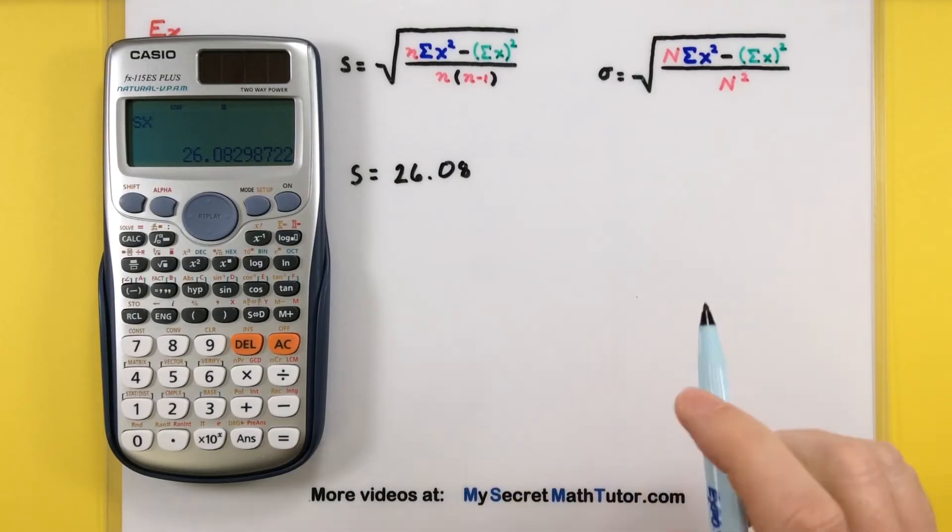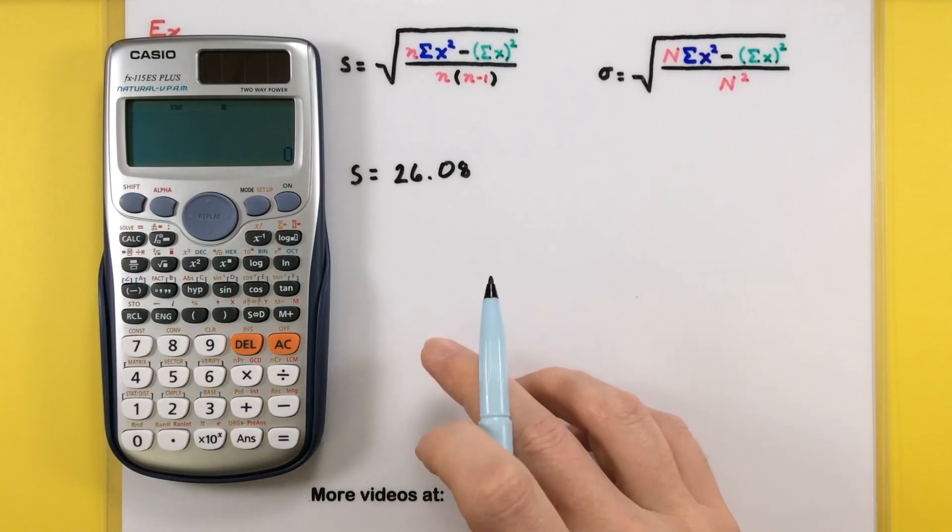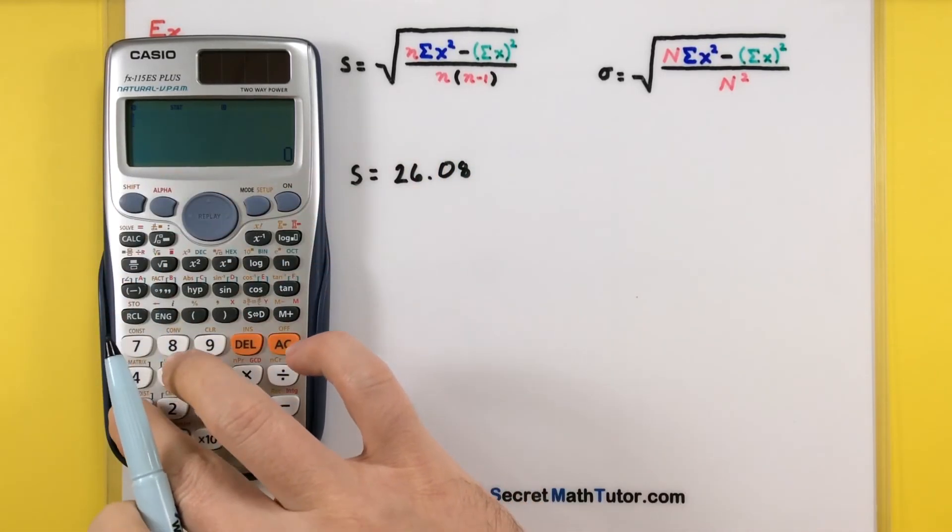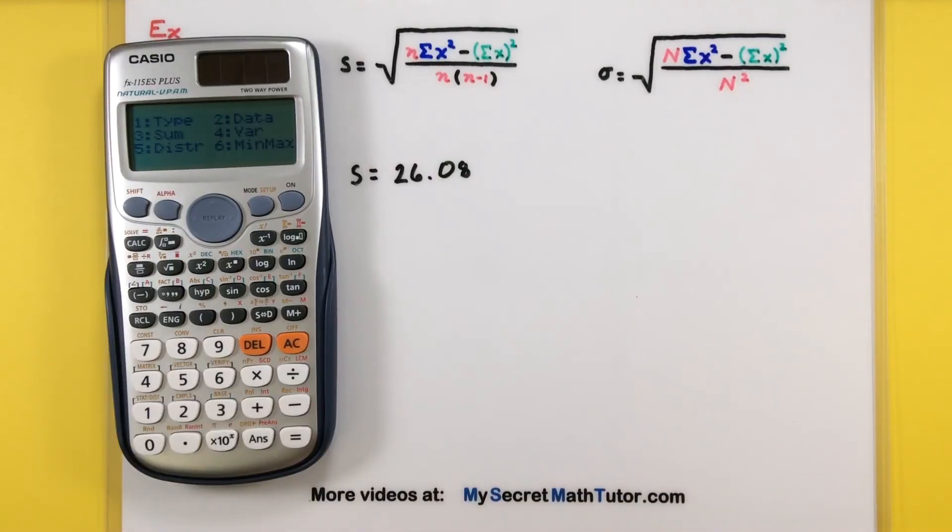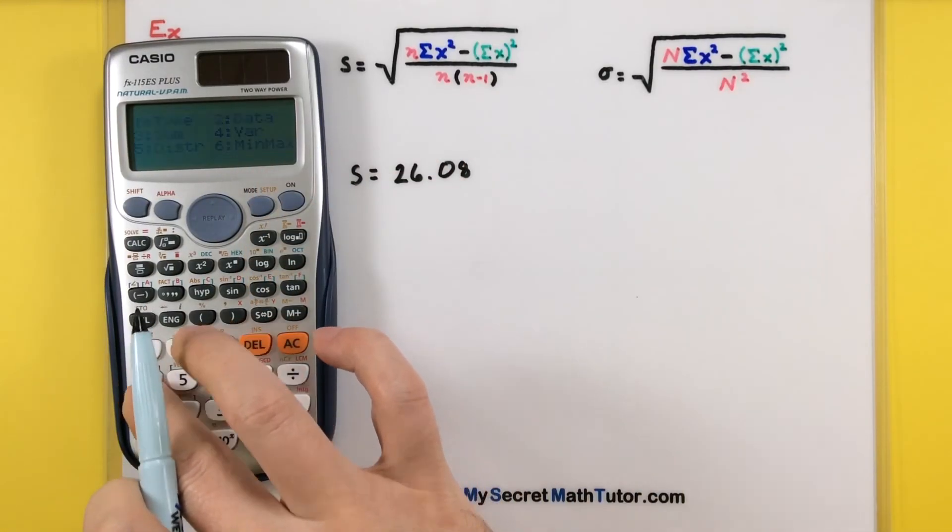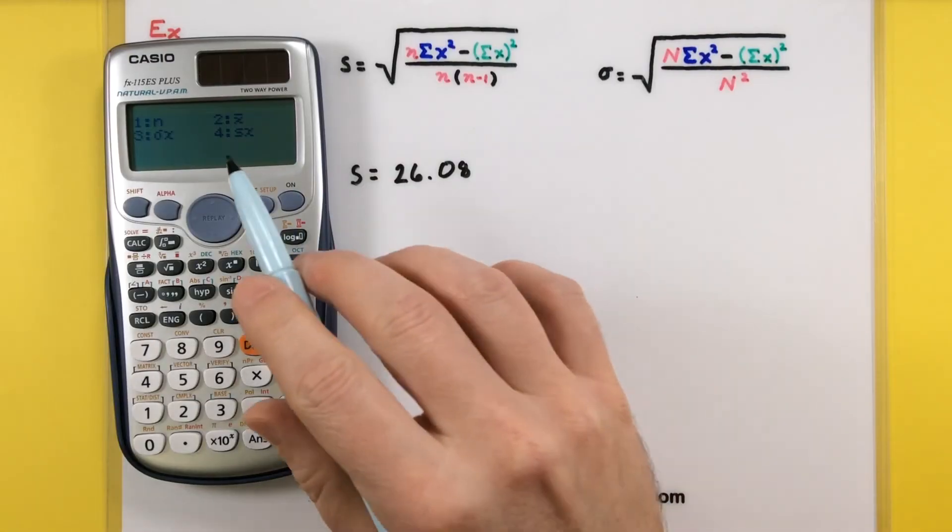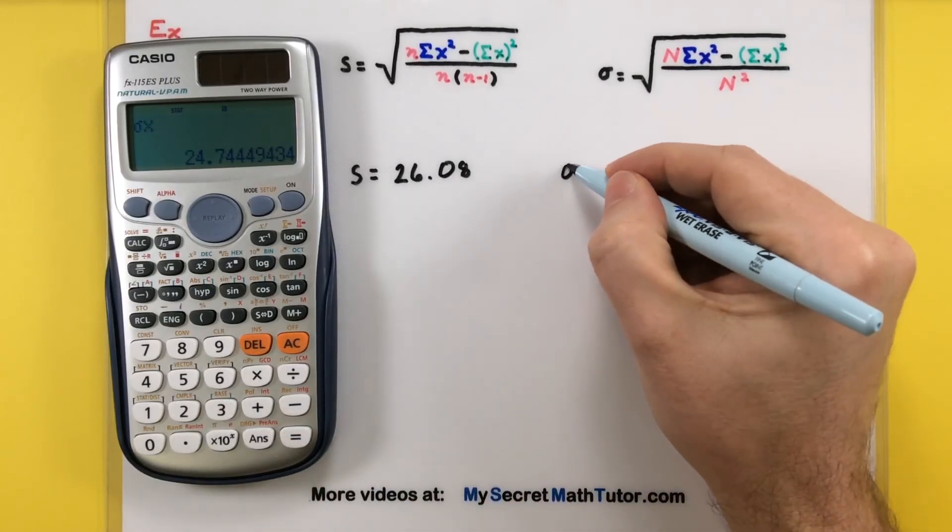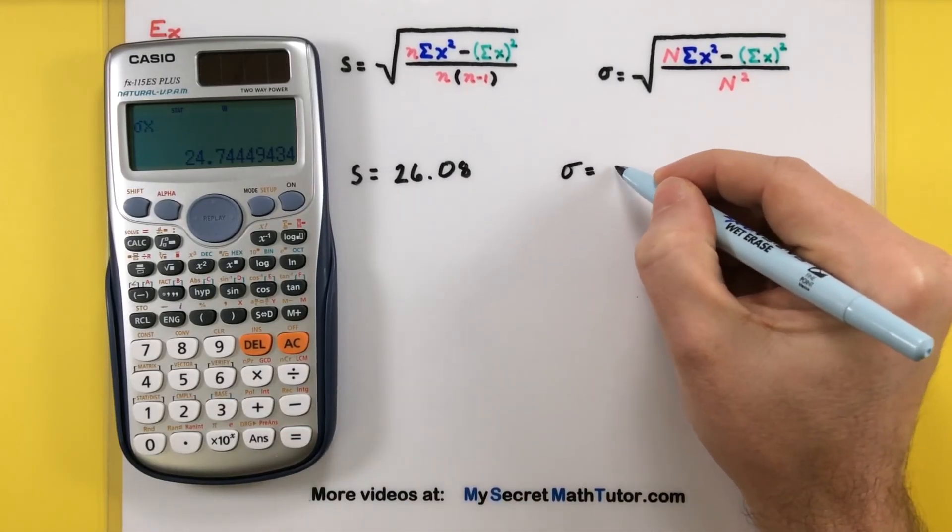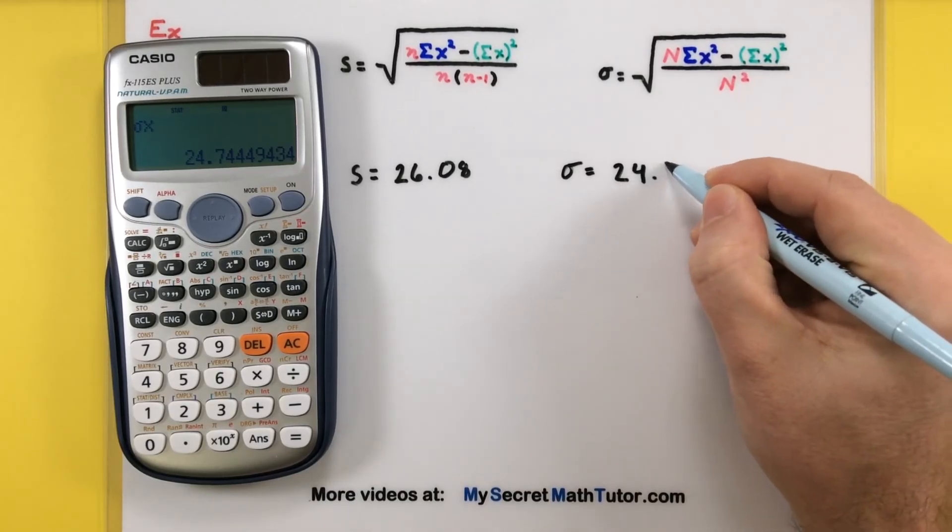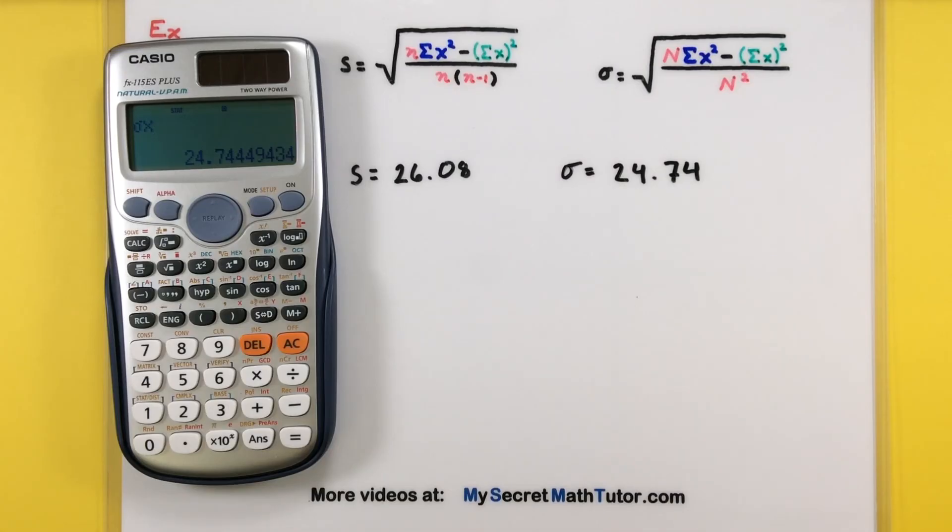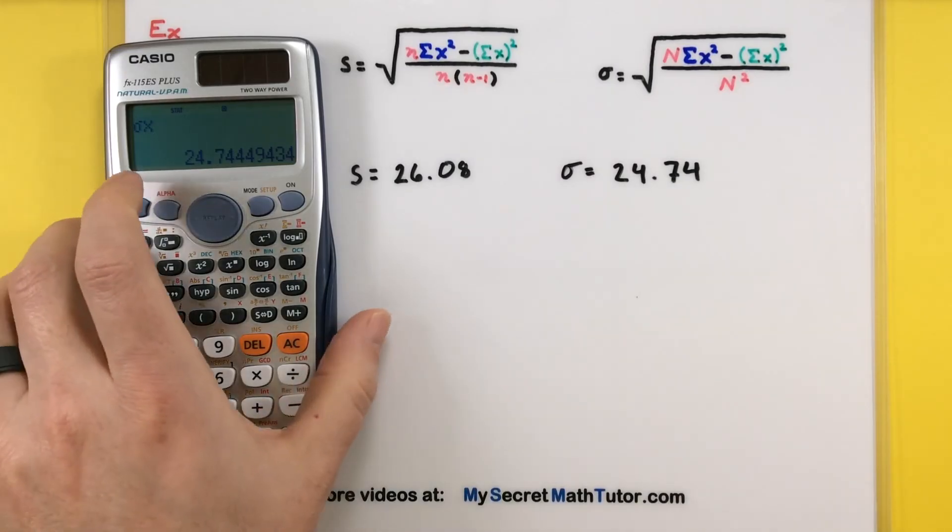Let's repeat this process so you can see it one more time and pretend that our data is from a population. So let's clear this out. Our data is still in there. It's still safe. Don't worry. We'll press second or shift stat. This is a measure of variance. So number 4. We're treating it as a population. So let's select that number 3 with the sigma. Enter. And since it's a slightly different formula, sure enough, we'll get a slightly different answer. Now I got 24.74. And that's, of course, treating it as if the numbers were from a population.